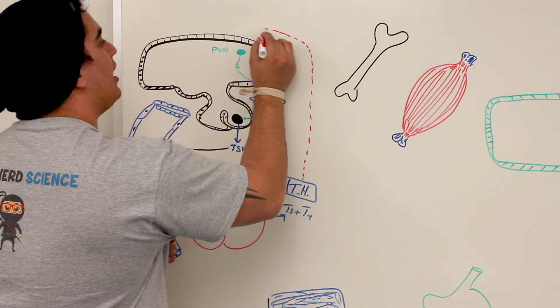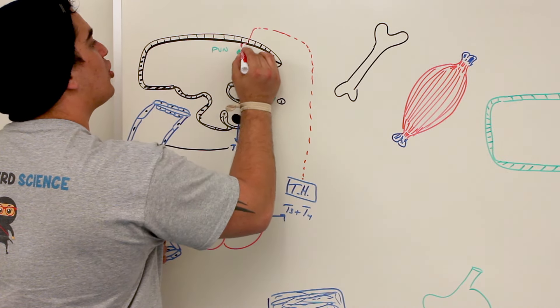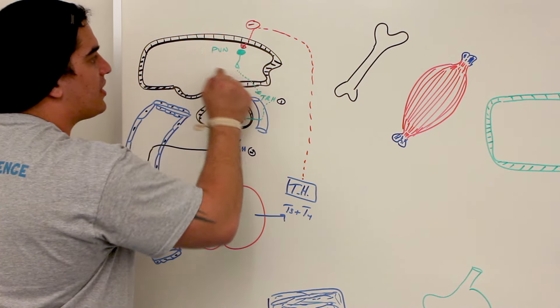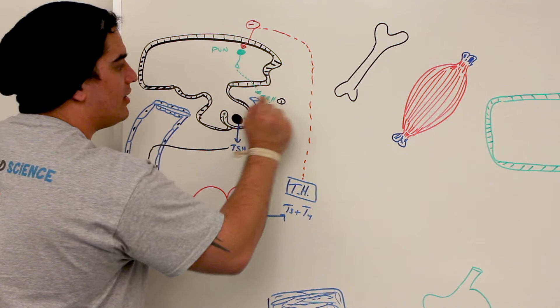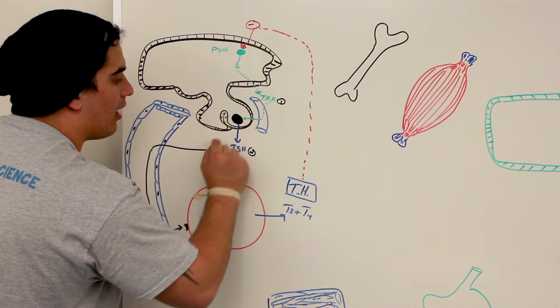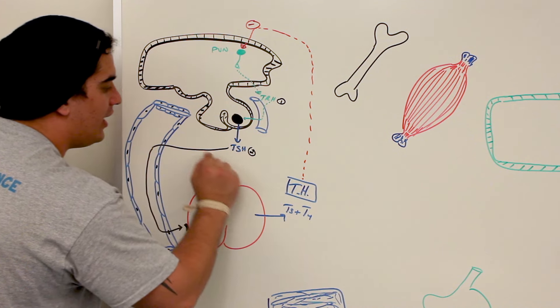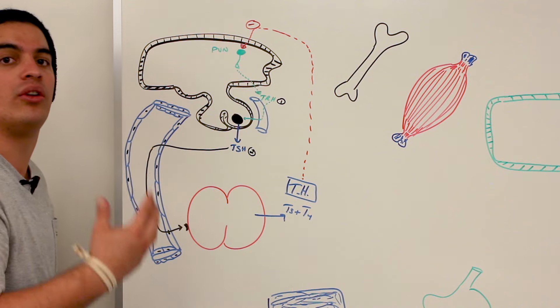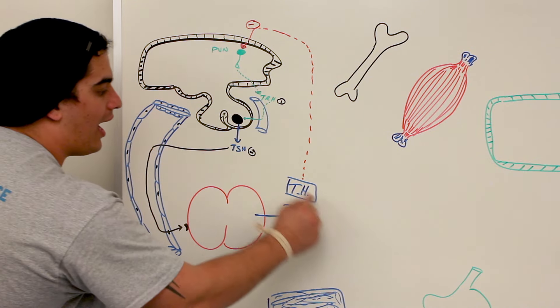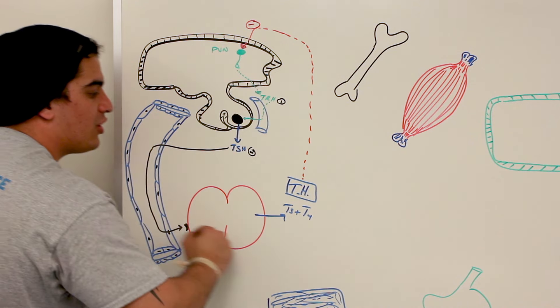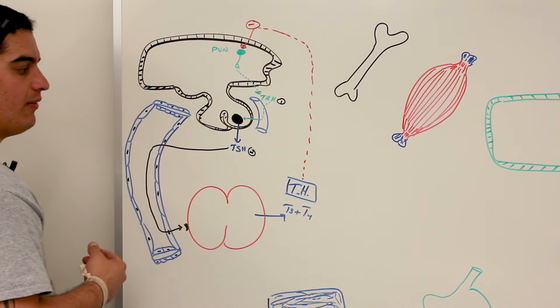It can actually circulate back up to the hypothalamus and exert what's called a negative feedback mechanism. What does that mean? It inhibits the paraventricular nucleus from making TRH. If you don't make a lot of TRH, what do you not make a lot of? TSH. If the TSH levels drop, do you make as much T3 and T4? No. So high T3 and T4, negative feedback, low TRH, low TSH, and then as a result, low T3 and T4.